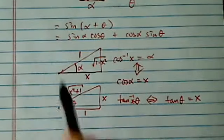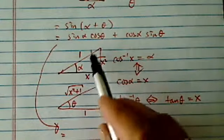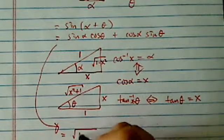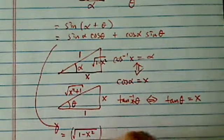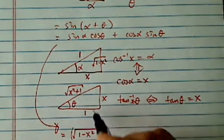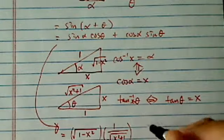Now given those two triangles, we can substitute in here. So we have sine of alpha, which is radical of 1 minus x squared over 1, times cosine of theta, which is 1 over radical x squared plus 1. That's the first term.